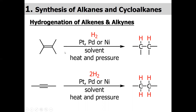For alkene, just one mole of hydrogen will be used to give the corresponding alkane — the pi bond will break to give the corresponding alkane. Similarly, if we have an alkyne, we need two moles of hydrogen to ultimately give the corresponding alkane.